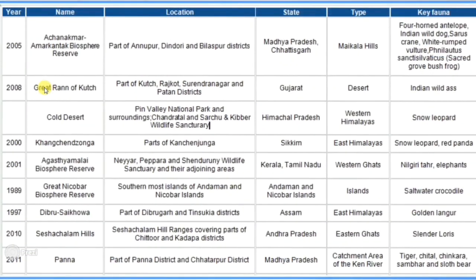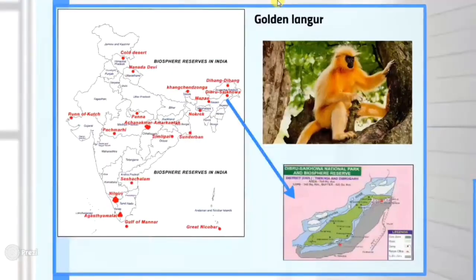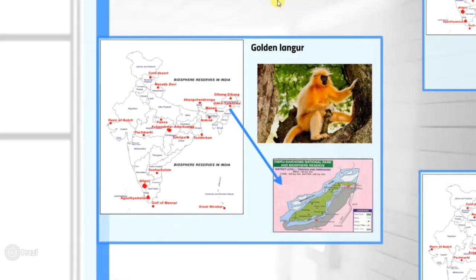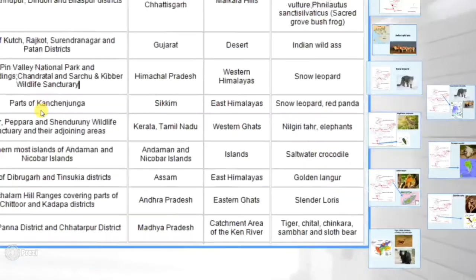Next is Dibru-Saikhowa Biosphere Reserve. It is located in Assam. The key fauna found here is the Golden Langur.